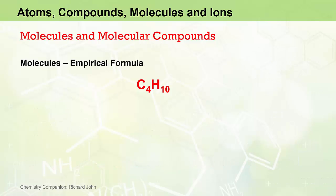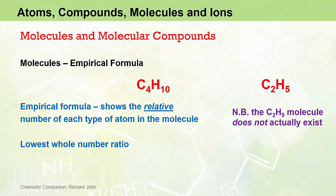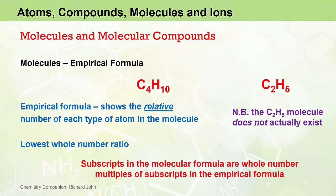A third important type of chemical formula used to characterize molecular compounds is the empirical formula. The empirical formula gives only the relative number of each type of atom in the compound, not necessarily the exact number. The empirical formula for C4H10 is C2H5, which is the lowest whole number ratio of the elements involved. It should be noted that the compound C2H5 does not actually exist as a molecule with those exact numbers of atoms, and this is typical of many empirical formulas. The subscripts in an empirical formula are always the smallest whole number ratio of the atoms in the molecule.